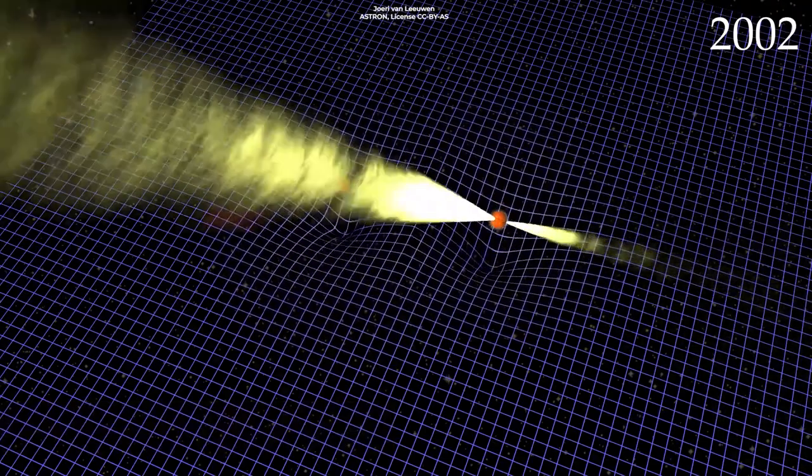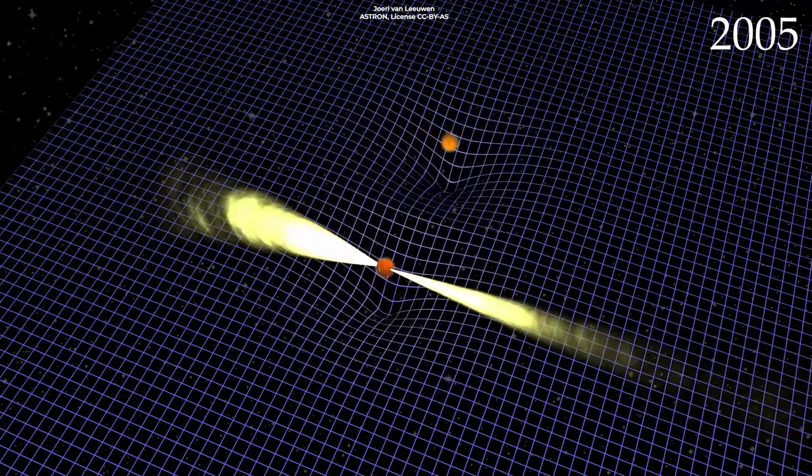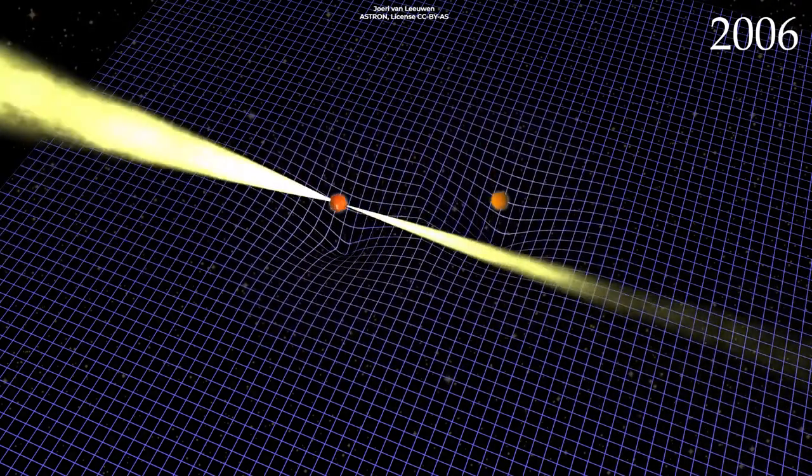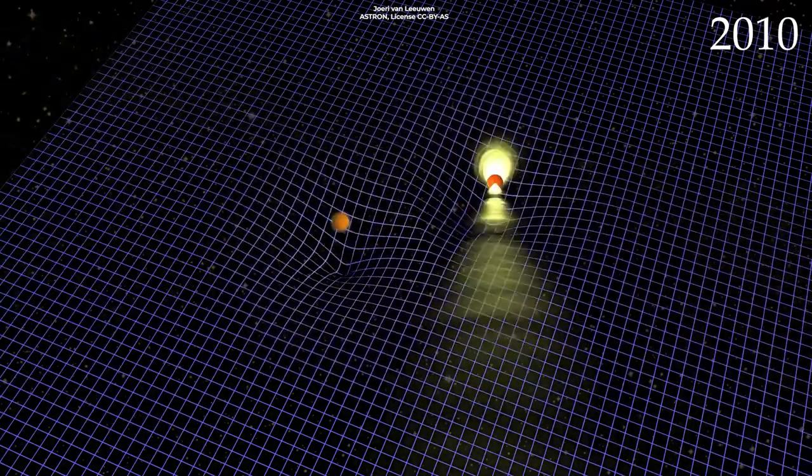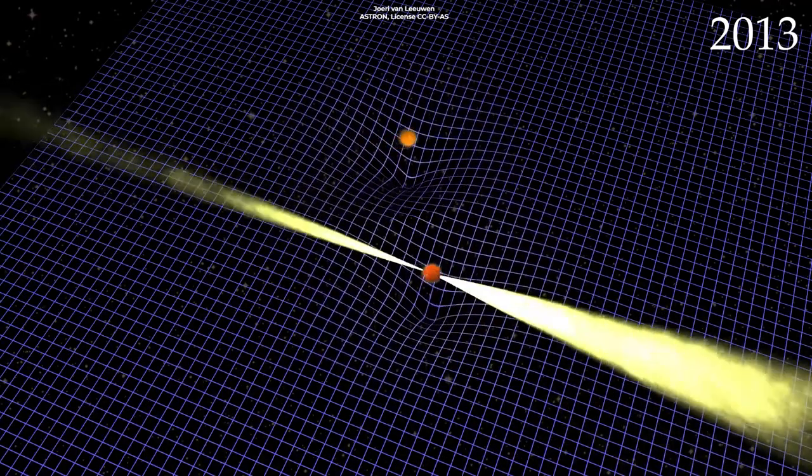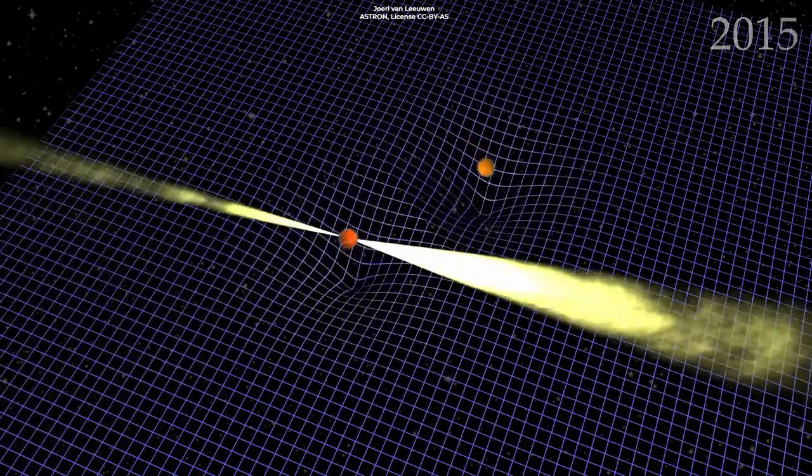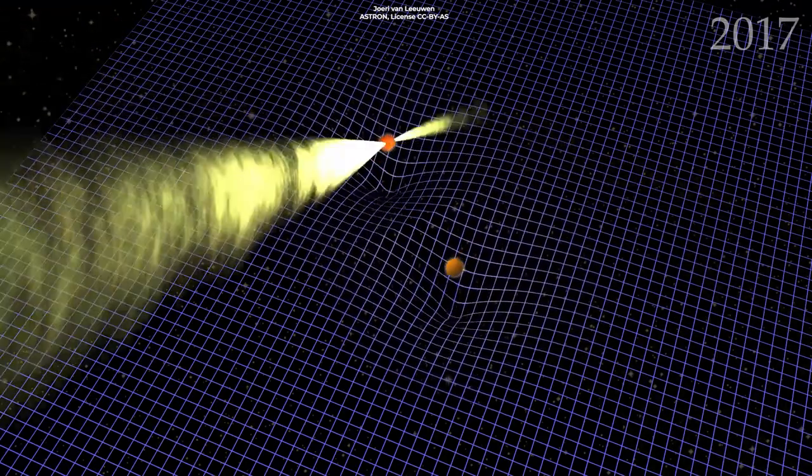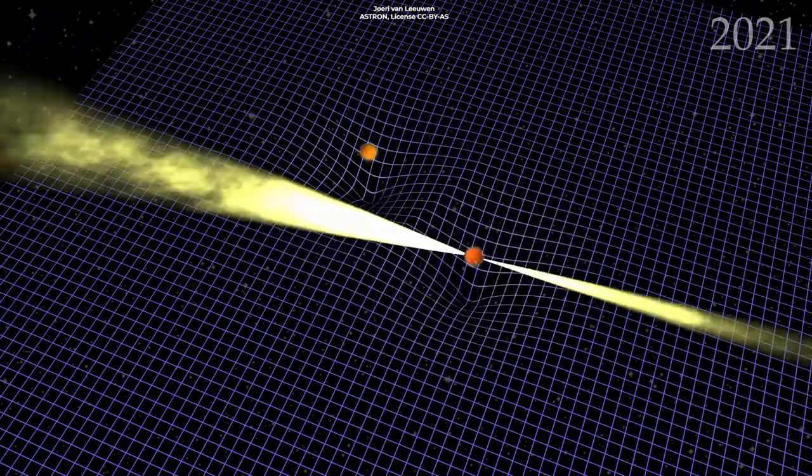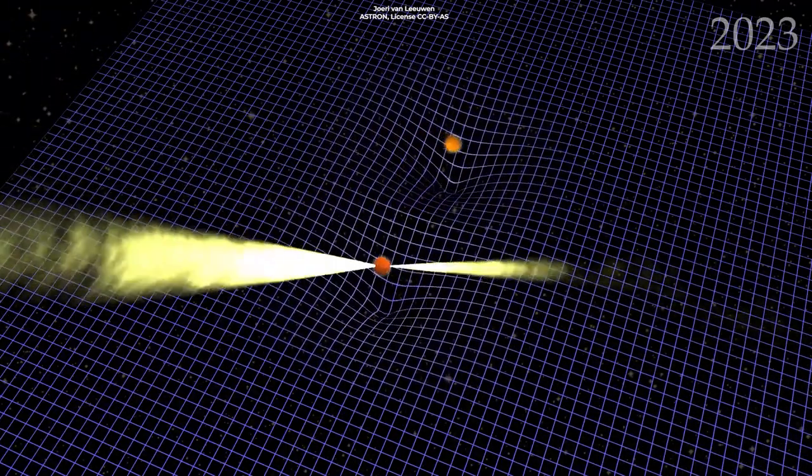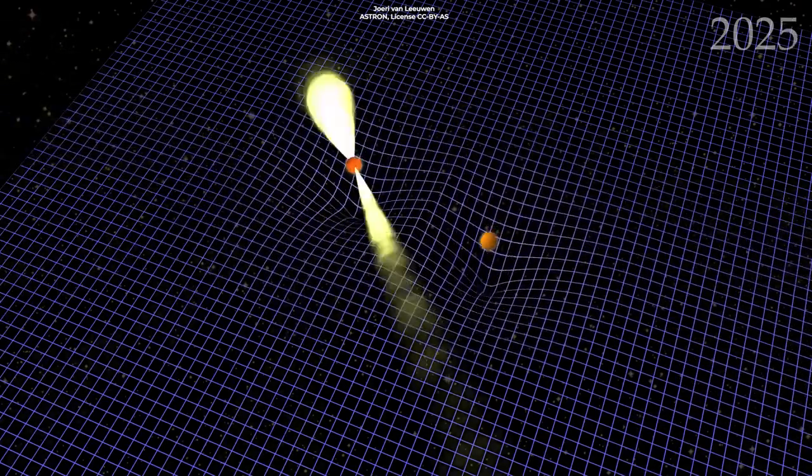Another interesting process seen in the binary pulsar is a slow wobble of its spin axis. The wobble, known as geodetic spin precession, is caused by the curvature of spacetime induced by the companion. Because of the wobble, astronomers can see different parts of the pulsar's lighthouse beam than they would normally see. These data will yield a two-dimensional map of the beam until it precesses away from Earth, which will most likely happen in a few decades.